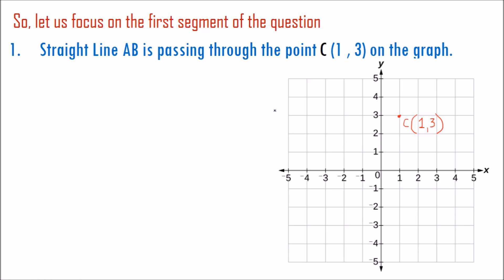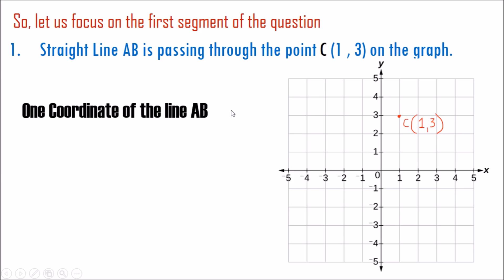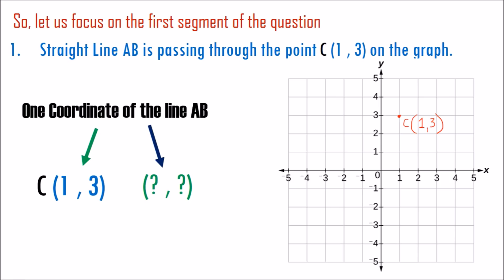So where is our line AB? We cannot tell you the exact location of the line AB because we have just one coordinate of the line AB, which is coordinate C where x is 1 and y is 3. In order to know the exact location of the line, we need two sets of ordered pairs, meaning two different coordinates. We need two coordinates because if we join those two coordinates with a straight line, we could tell the exact location of our line AB.